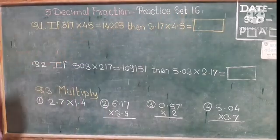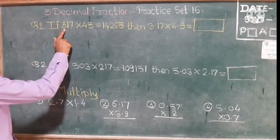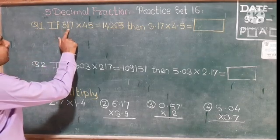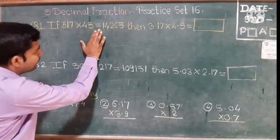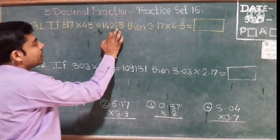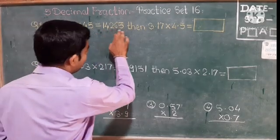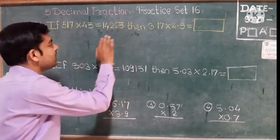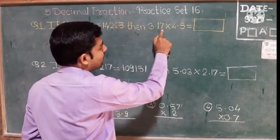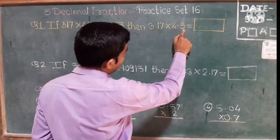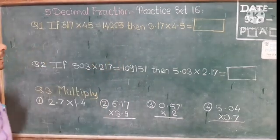Look at the first question. If 317 multiplied by 45 is equal to 14265, then 3.17 multiplied by 4.5 is equal to what?